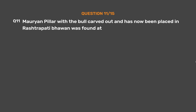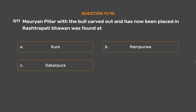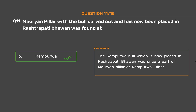Question No. 11. The Mauryan pillar with a bull carved out, which has now been placed in Rashtrapati Bhavan, was found at: Option A: Kure. Option B: Rampurva. Option C: Sakrapura. Option D: Badhya. The correct answer is Option B: Rampurva. The Rampurva bull, now placed in Rashtrapati Bhavan, was once a part of a Mauryan pillar at Rampurva, Bihar.